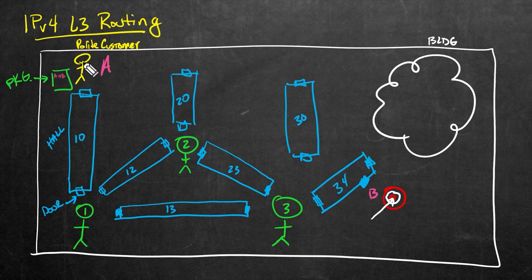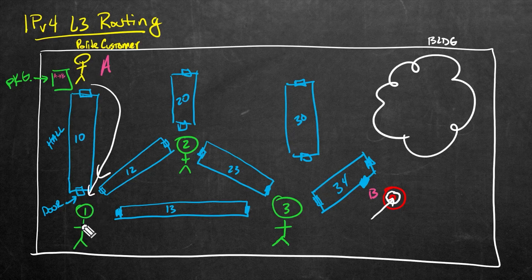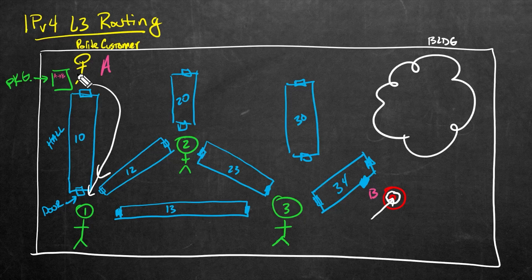So the polite customer could say: this package is coming from me at point A in hall 10, and I need it delivered over here to hall 34 to person B. The customer doesn't know the whole deal about how to get this package way over there, but they're going to hand it over to the employee down this hall. So there's a handoff — the customer handed the package to person number one. It's really a matter of trust. The customer just hopes person one will do the right thing and forward it on. The customer did everything in their power — they addressed it correctly and handed it off. Now it's up to person number one to forward it.